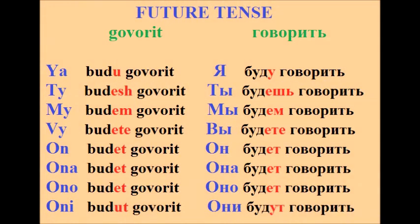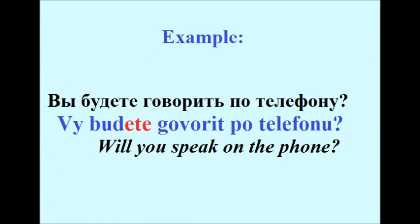Future tense: Я буду говорить, ты будешь говорить, мы будем говорить, вы будете говорить, он будет говорить, оно будет говорить, они будут говорить. Example: Вы будете говорить по телефону — You will be speaking on the phone.